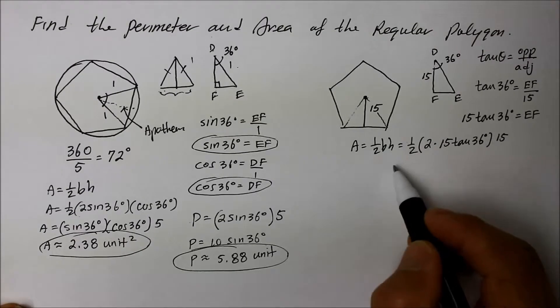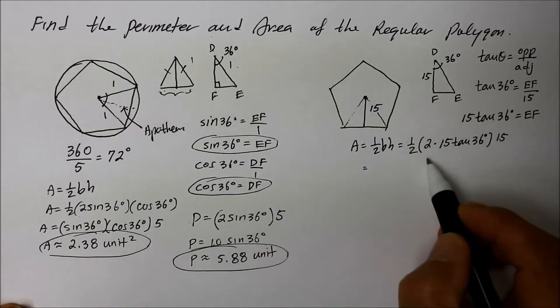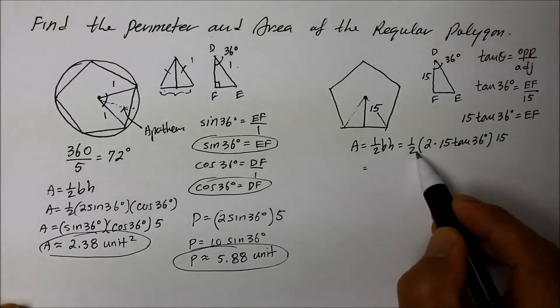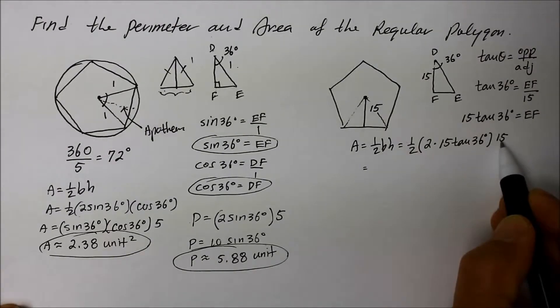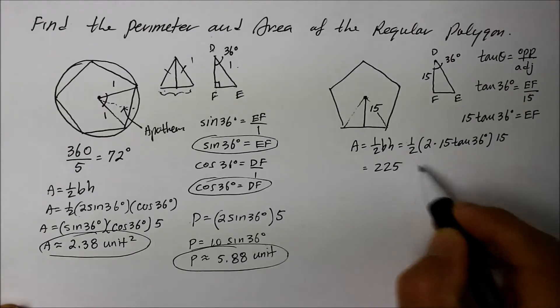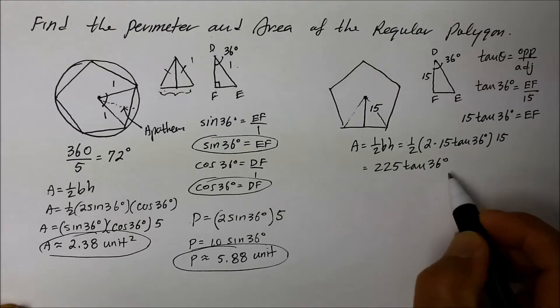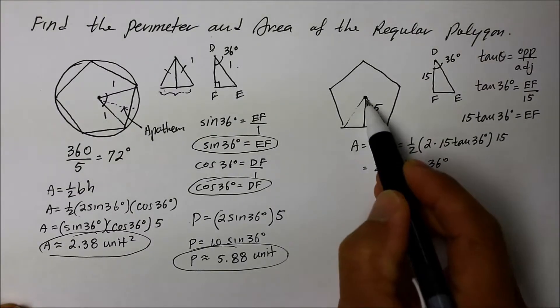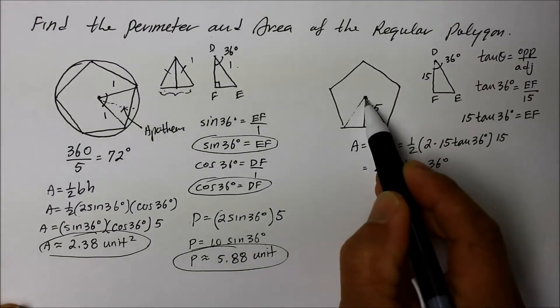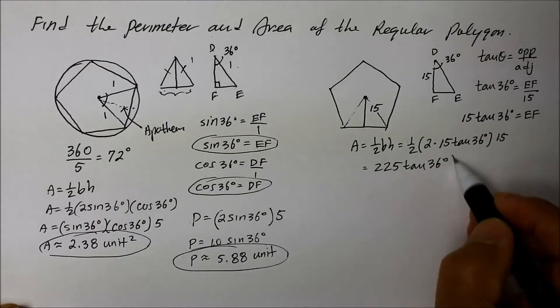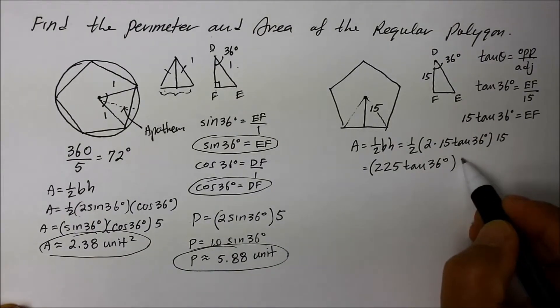Not too bad so far. And so we're going to simplify this expression. So we're going to say, well, the coefficient 1/2 and 2, they simplify. So we have 15 times 15, which is 225, I believe. 225 tan 36 degrees. However, that's just one part of that pentagon. That's just one triangle out of that pentagon. So we need to multiply the whole thing by 5 now.